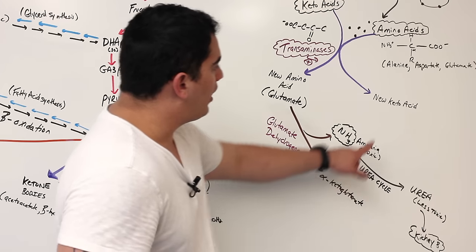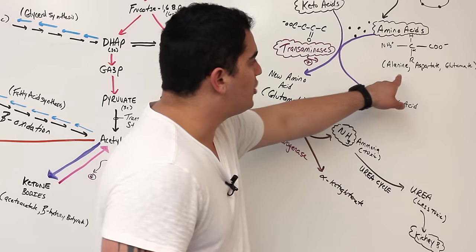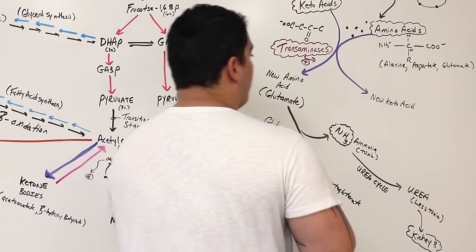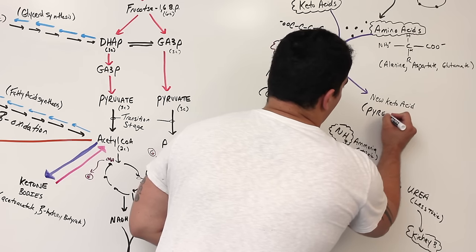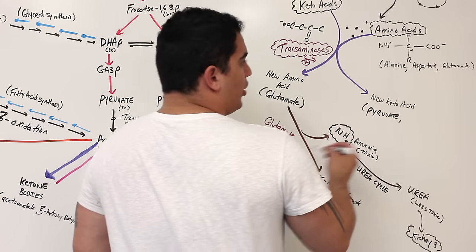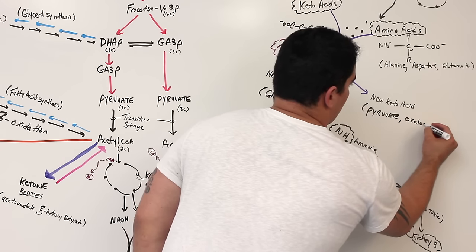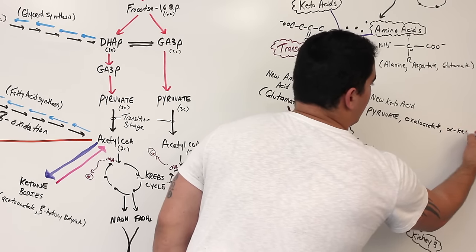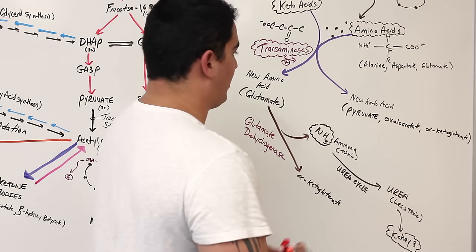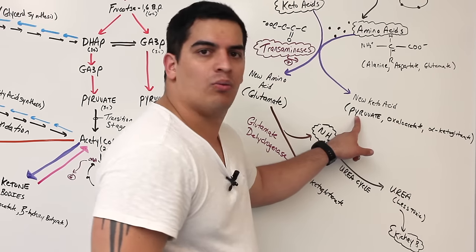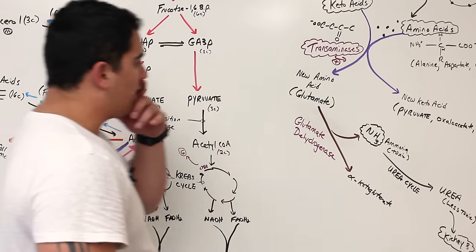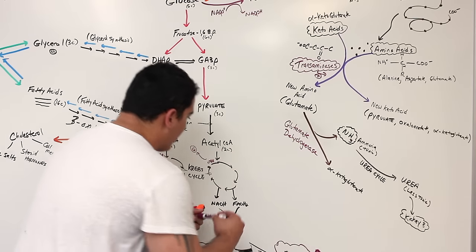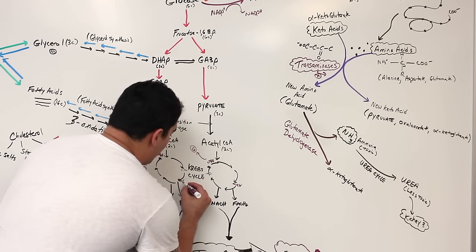What can happen with this alpha-ketoglutarate and these new keto acids depends on the amino acid. For example, if you have alanine, one of the keto acids you can generate is actually called pyruvate. If you have aspartate reacting in this process, you'll convert it into oxaloacetate. If you have glutamate reacting, it will be converted into alpha-ketoglutarate. Now, pyruvate is right here in the pathway. Oxaloacetate is right here in the Krebs cycle. And alpha-ketoglutarate is also found within the Krebs cycle.